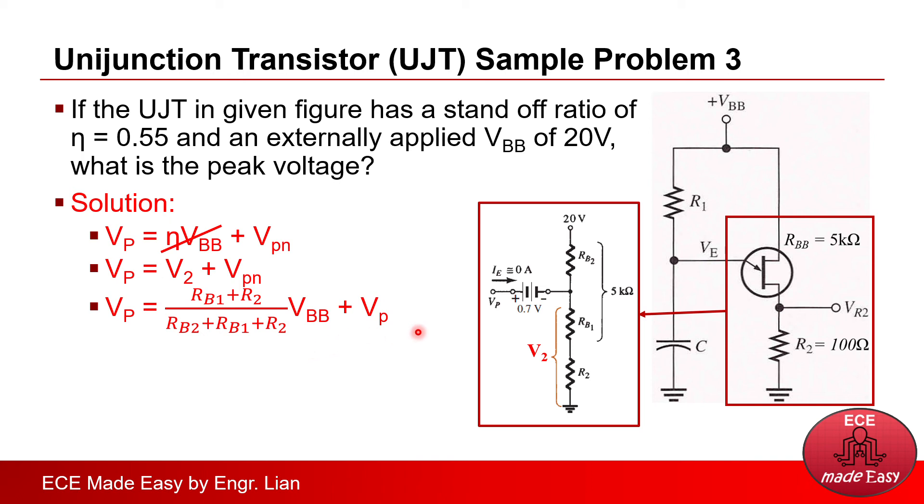However, we were not given with Rb1 and Rb2. Instead, we were given with the total Rbb of 5 kilo ohm. So, to determine Rb1 and Rb2, we will recall the formula Rb1 equals to eta or standoff ratio times Rbb. And substituting the given 0.55 and 5 kilo ohm, Rb1 is 2.75 kilo ohm.